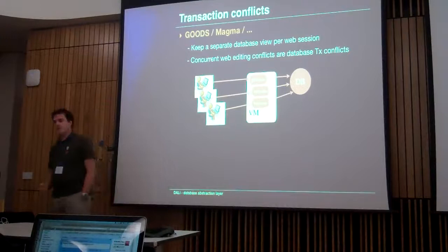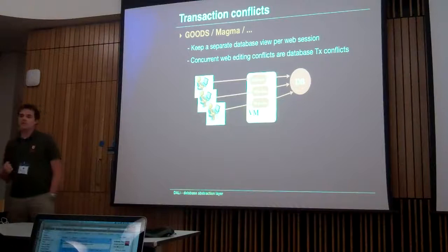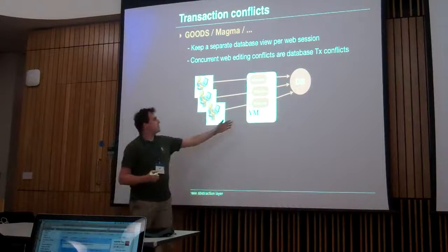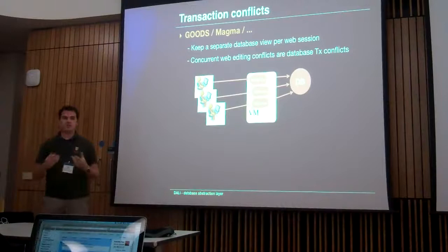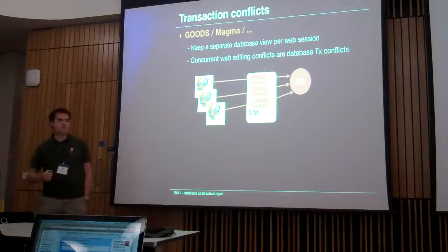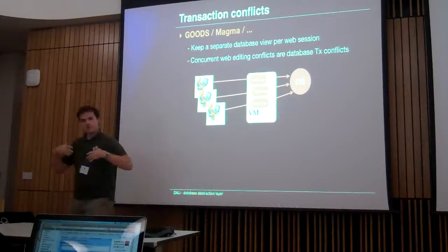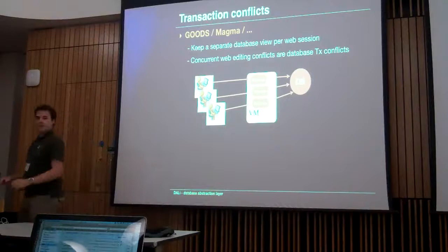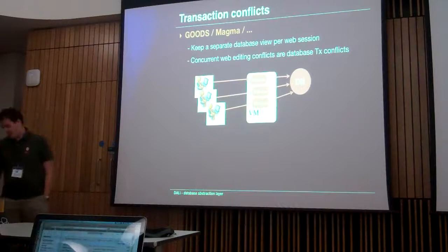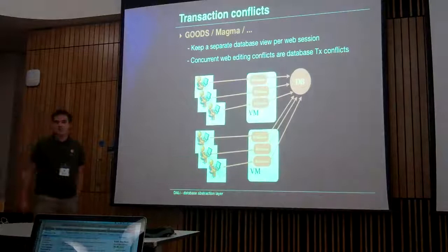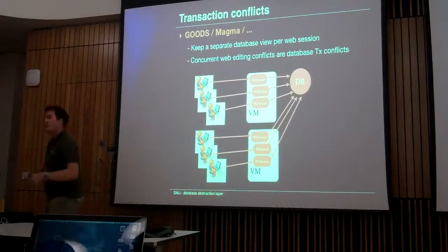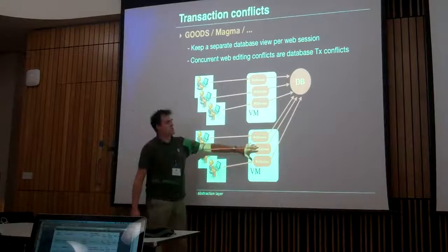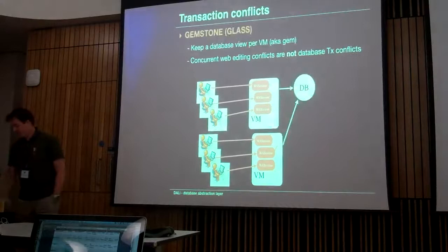If you work with Goods, Magma, and other databases where you open a connection from an image, you open a connection and keep a view from a single Seaside session. Every session keeps a connection to your database — it has its own view. If you make changes from within one session and do a commit, and you have conflicts at the database level, the database will tell you that you changed the same data. So you get a chance of having an abort and you can alert the user about the conflicting change. You can scale this in Seaside — just spin up another virtual machine. Every session has its separate view on the database, and you can use the database to capture all these conflicts.